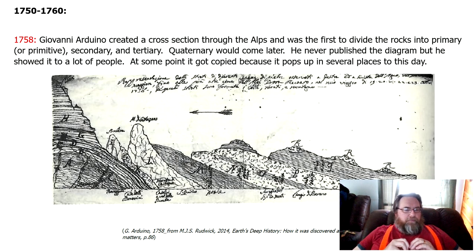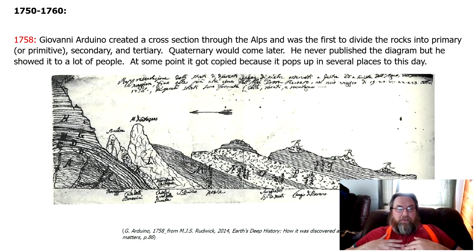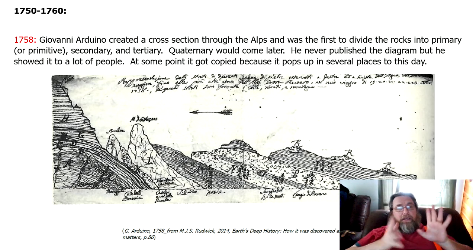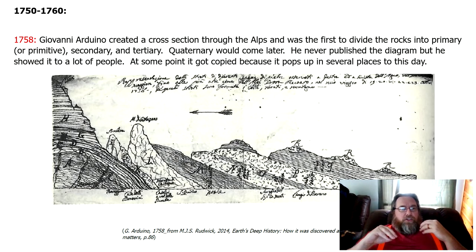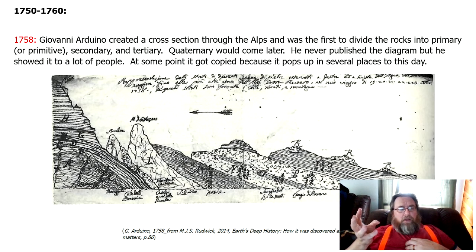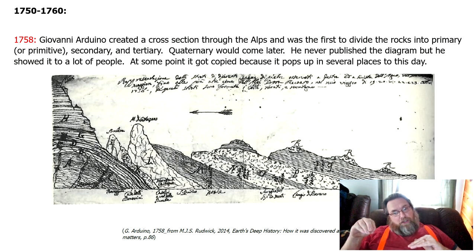We're going to go decade by decade. Some decades there's nothing I felt was significant, so you're going to see some blank spaces. Let's start with 1750 to 1760 with Giovanni Arduino. He created a cross section through the Alps and was the first to divide rocks into primary or primitive, secondary, and tertiary.